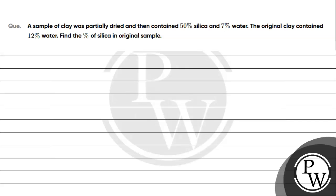Hello Bacho! Let's read this question. A sample of clay was partially dried and then contained 50% silica and 7% water. The original clay contained 12% of water. Find the percentage of silica in the original sample.